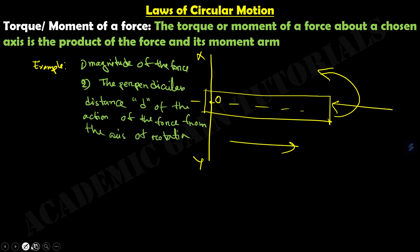Suppose I apply force F at a point C, and the distance from origin O to point C is R. The perpendicular distance of the action of the force is D, and the force acts at an angle theta. Since this point is perpendicular, this angle is 90 degrees. From triangle OCD, sin theta equals D divided by R.